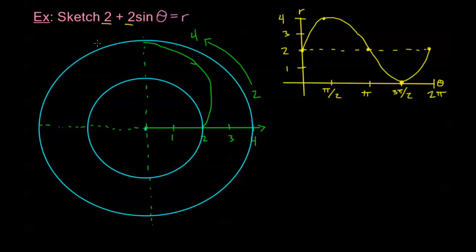Now as my angle changes from π over 2 to π, on my reference graph, we see that that's going to be going from r equals 4 to r equals 2. So we're going to be doing similar to what we did on that side, but in the opposite direction. I want to kind of mirror what we did. We see it's actually very similar to this first part, just in the other direction.